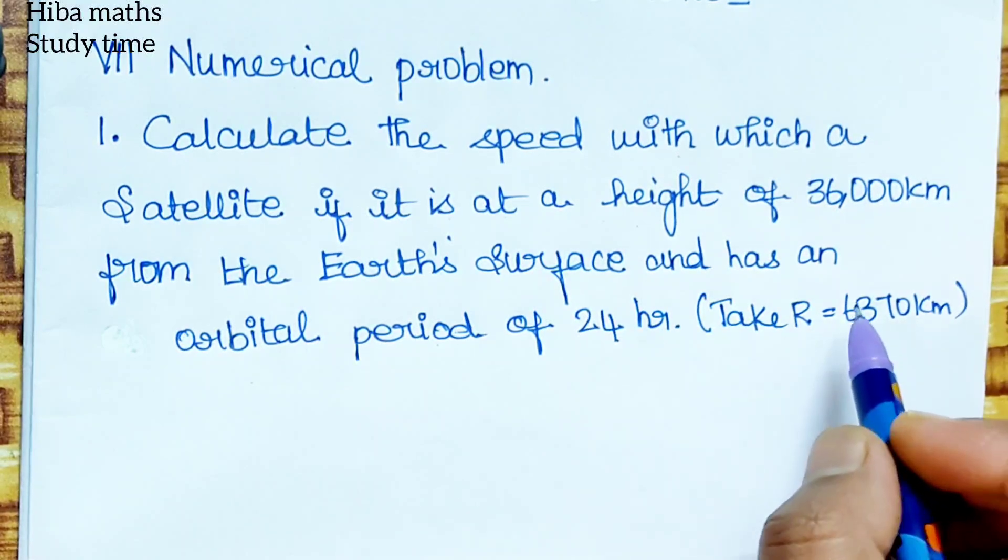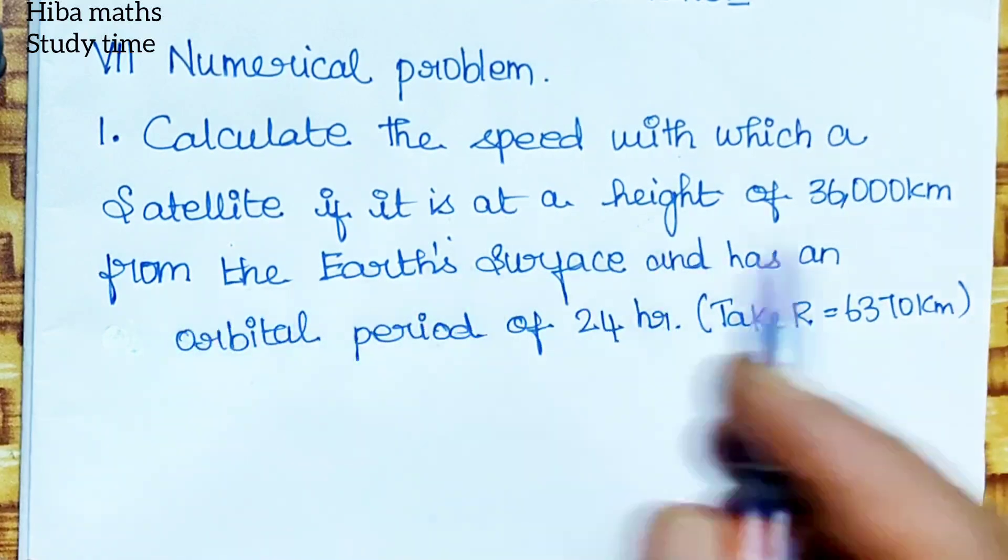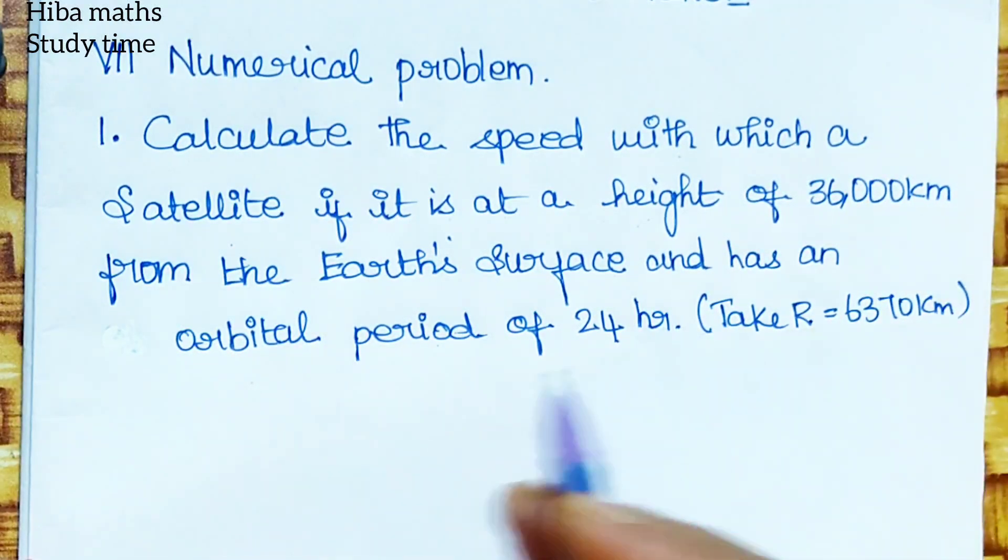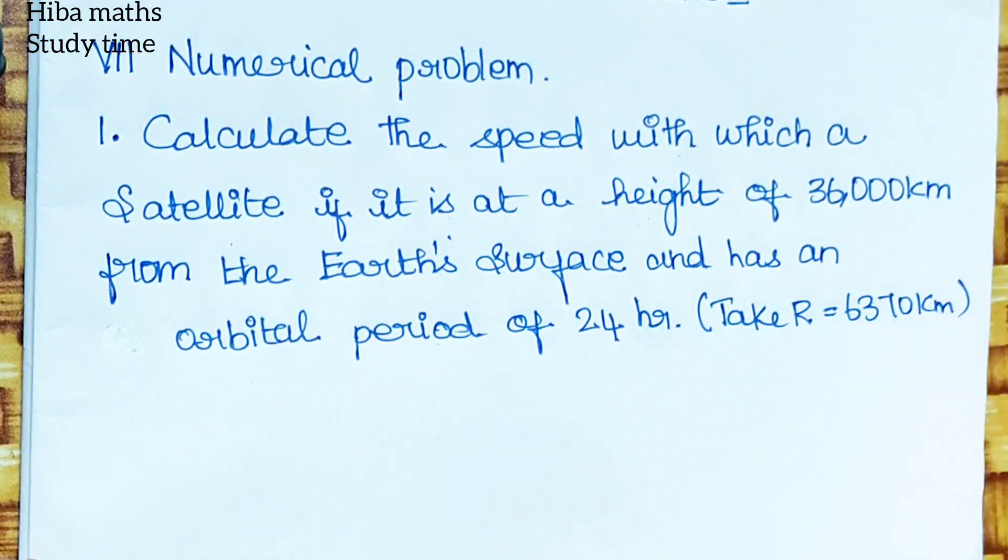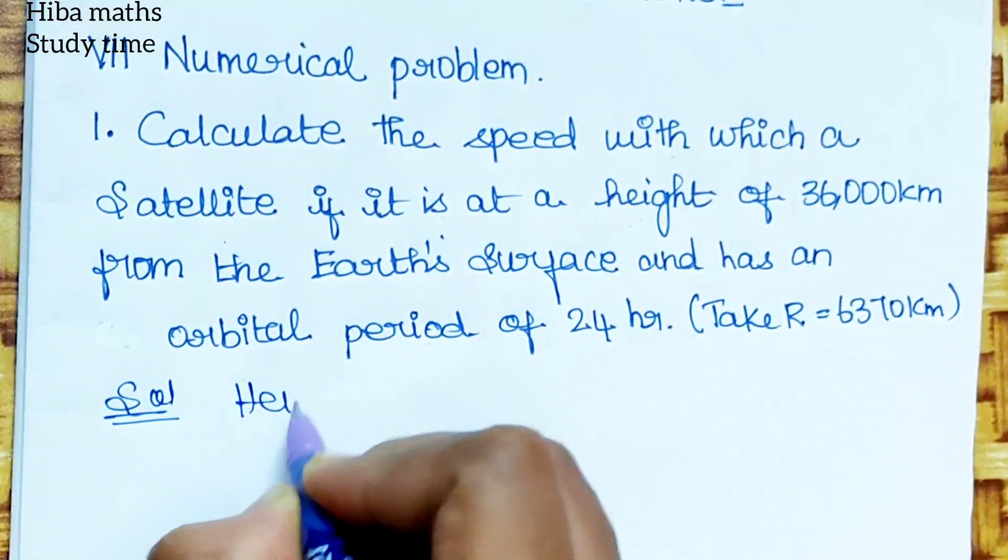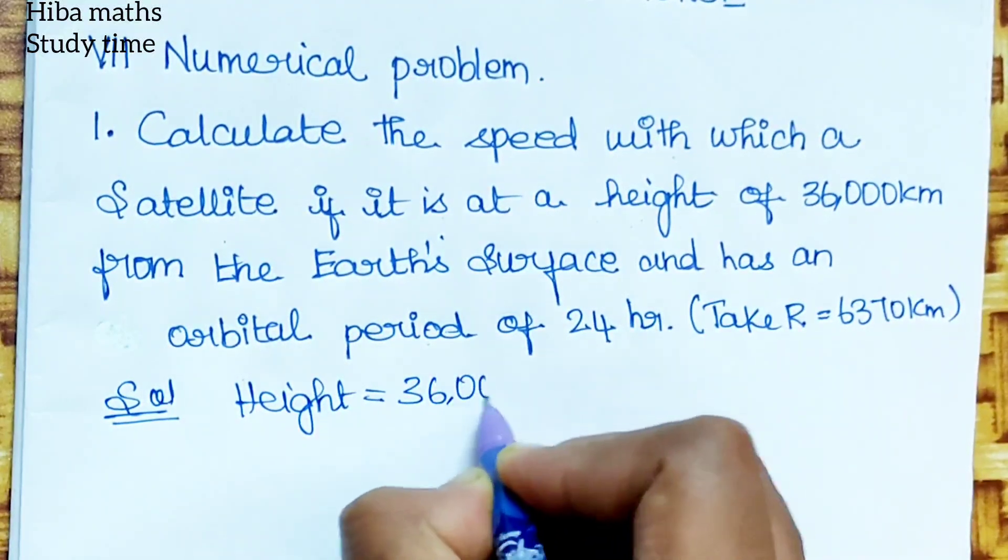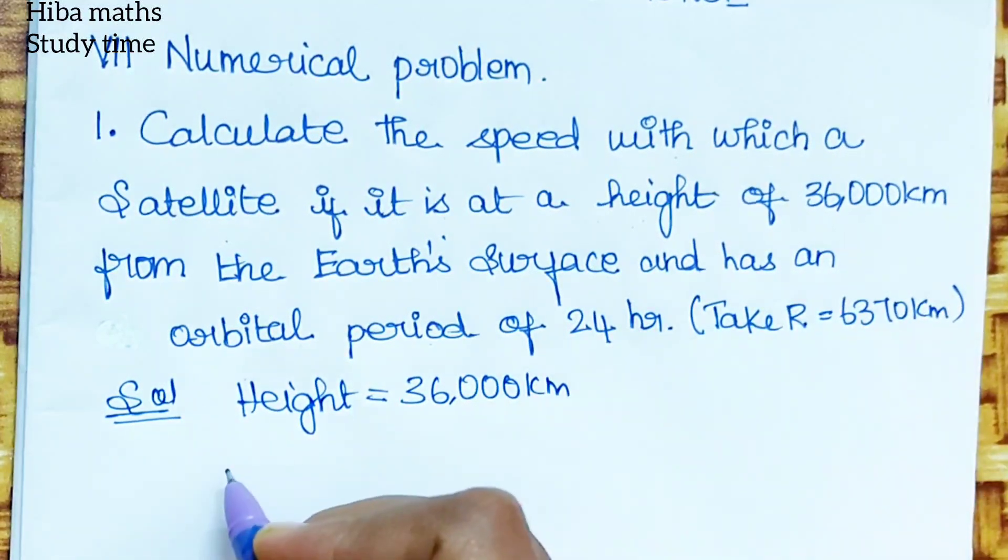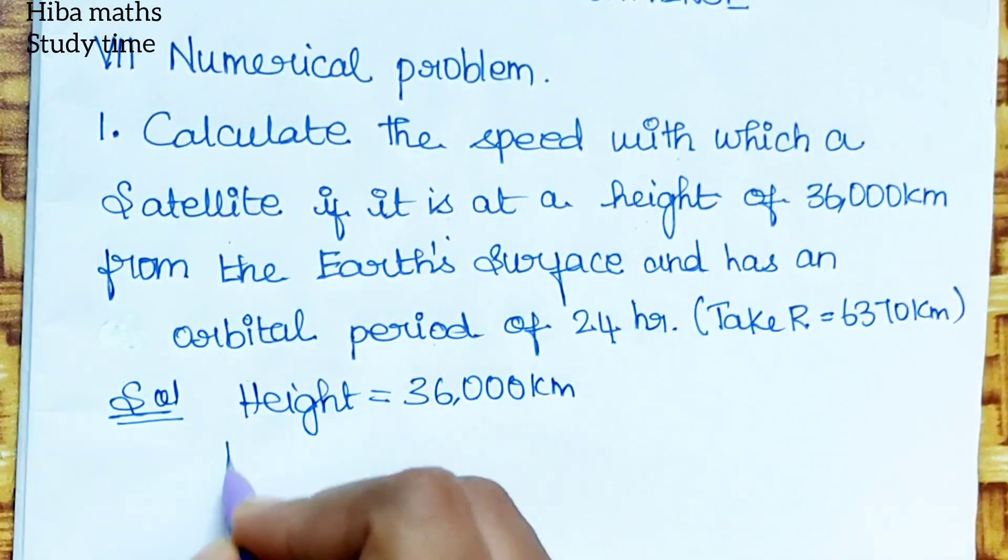Speed of the satellite. That is the height of the Earth's surface, an orbital period is 24 hours. So if you do it, you will do it in hours. We will get to the height of the Earth's surface. The height is 36,000 km. If we do it, you will get to the radius of the Earth's surface.